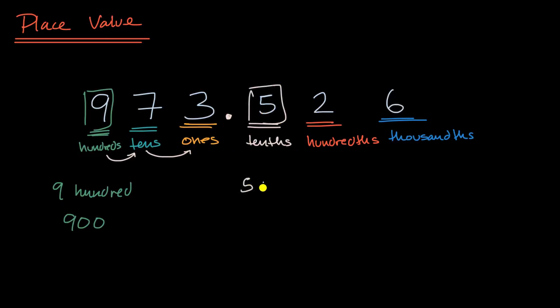This five doesn't just represent five, it represents five-tenths. Or another way of writing five-tenths, you could write it like this, 0.5. You just have a five in the tenths place. Or, you could write it as five-tenths.